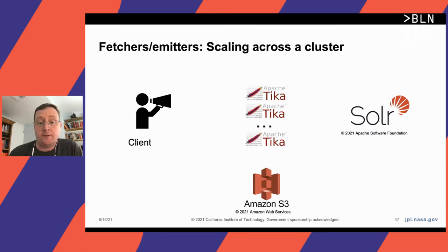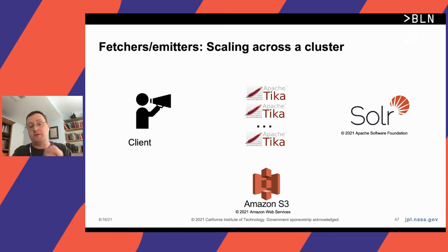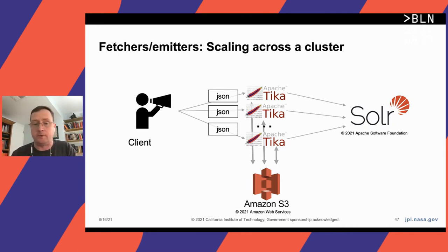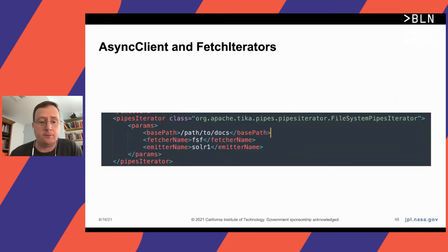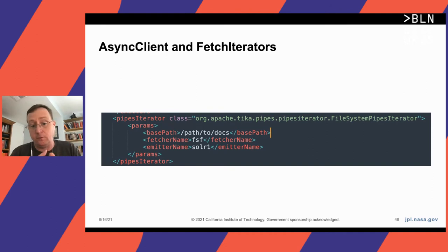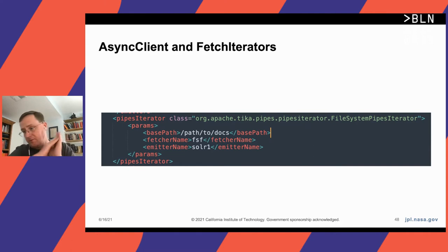You can have multiple worker JVMs running in parallel to handle many requests simultaneously. And you can scale this across a cluster easily because the client is no longer pulling all the bytes from a data source — you're just sending JSON. Tika pulls the appropriate bytes, does the processing, and forwards to an endpoint. We also have the notion of a fetch iterator that automates this — a file system pipes iterator will iterate through files, use the specified fetcher, and use the emitter. You can configure simple XML to say go to a directory, pull all these files, and send them to Solr.